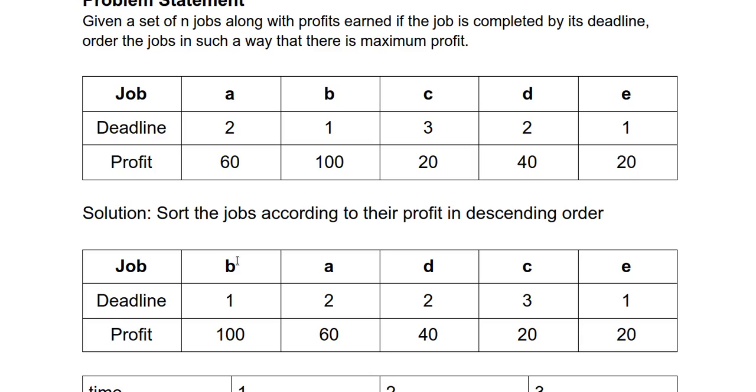So job a has a deadline of 2 seconds, so we can select a because we will be able to complete this job in the given deadline. However, after selecting a, we cannot select d because d's deadline has already passed and we won't be able to complete d in the given deadline. So we just ignore d. We select c because it can be completed in the given deadline. However, we cannot select e because its deadline has already passed.